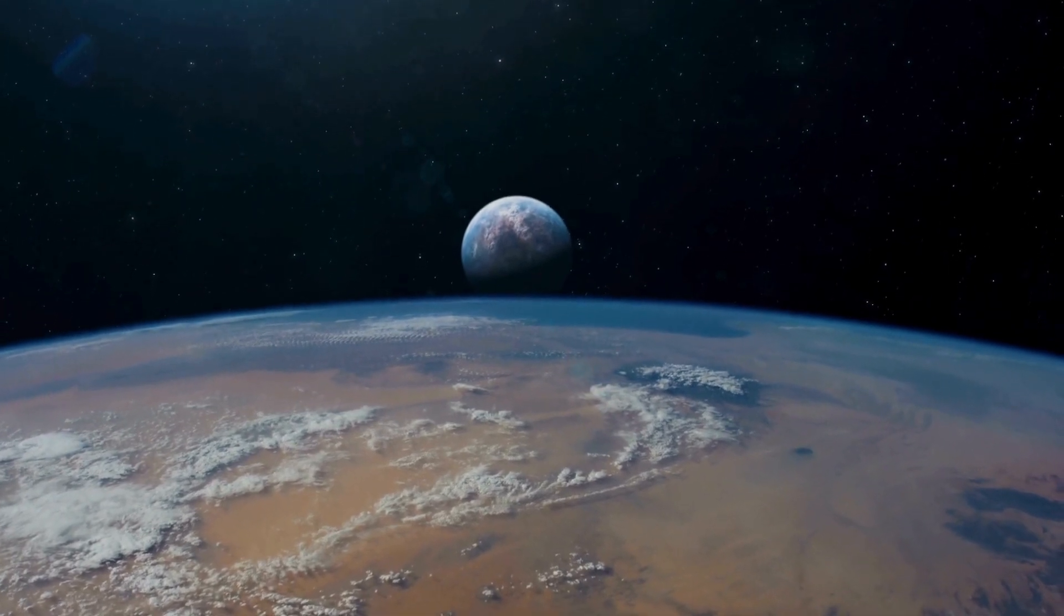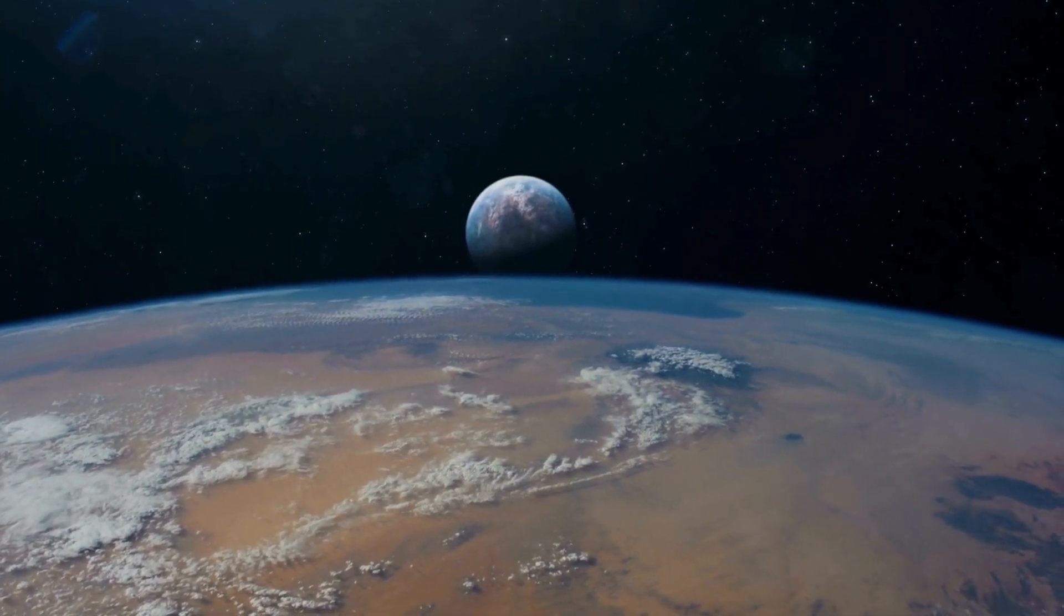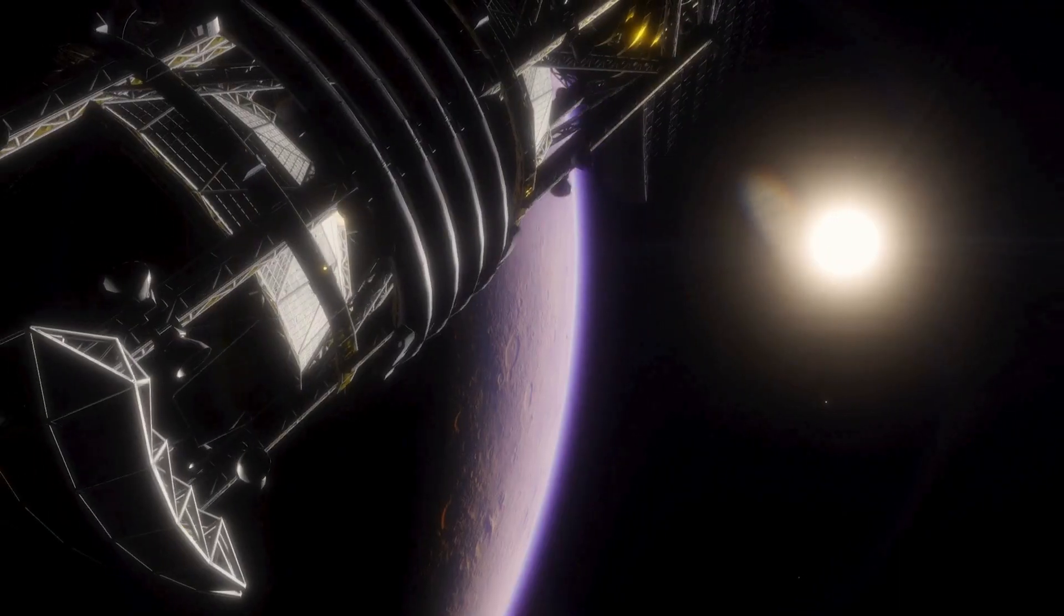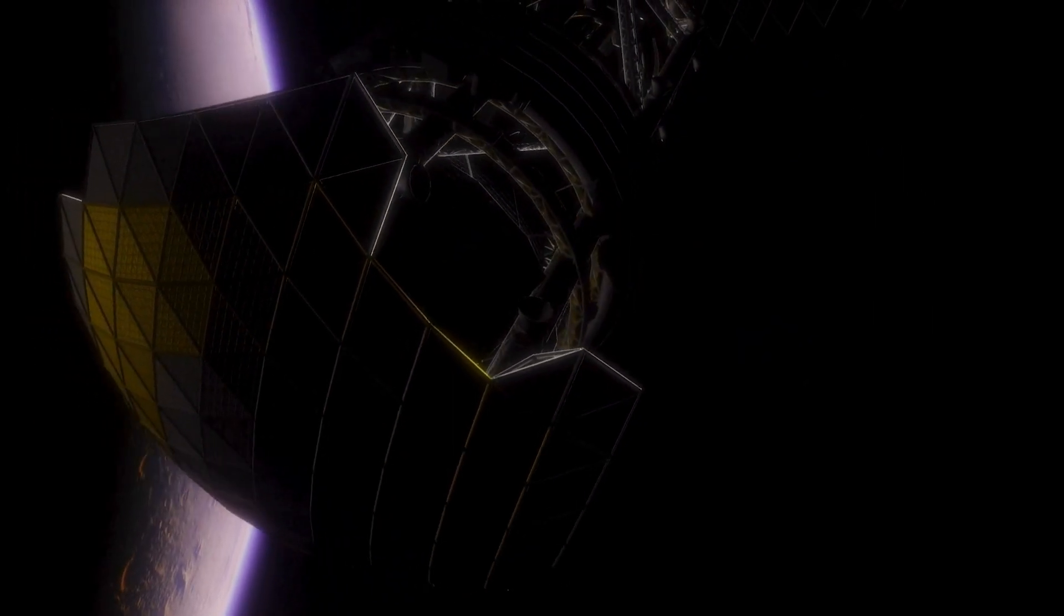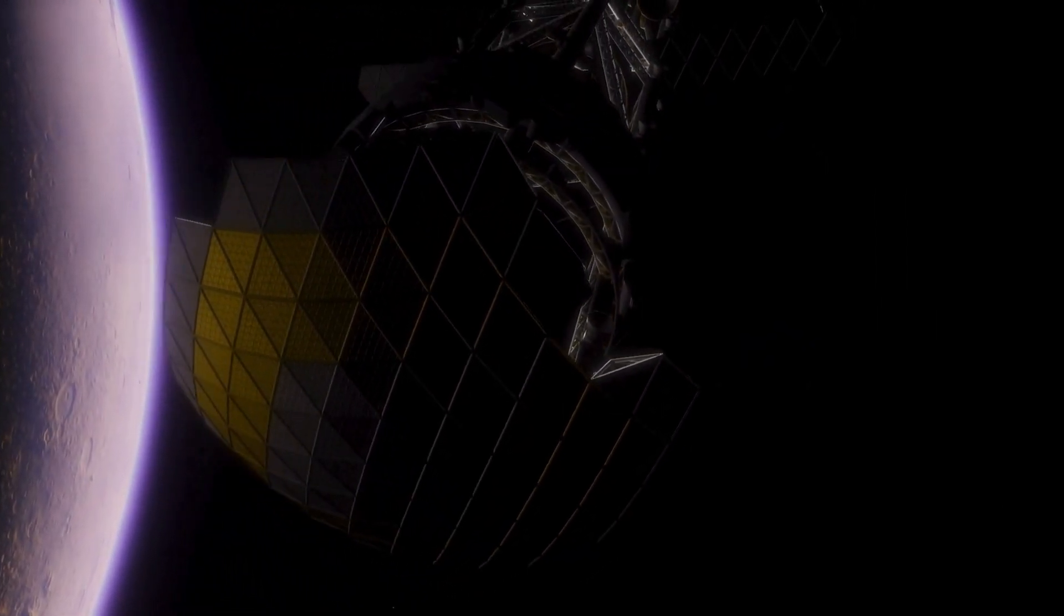Proxima Centauri b receives just about the same amount of energy from its star as our Earth does from the Sun. Could this mean there's water on its surface, perhaps even life?